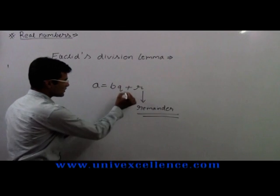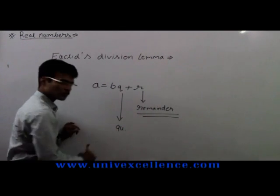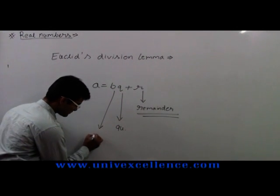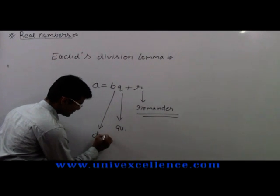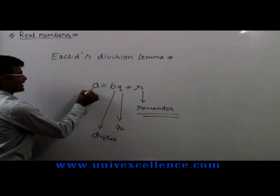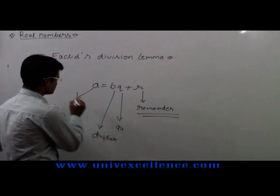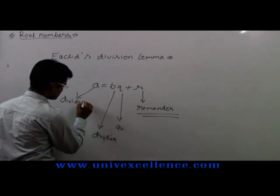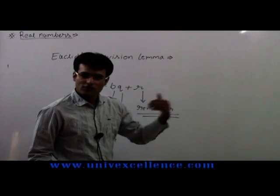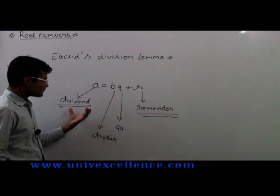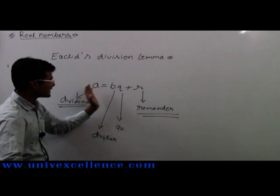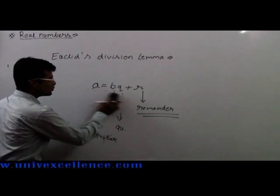Q is the quotient, B is the divisor, and A is the dividend. So, we are demonstrating these things from our previous classes, but now we have this. The name of this thing is Euclid's division lemma. It says that A is equals to BQ plus R.